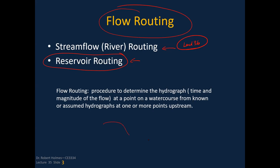If I've got a river system and the flow is going in one direction, and I know the hydrograph at an upstream location, by the time the water gets downstream, that hydrograph is going to have a different look — broader and a little flatter. The routing process describes how the hydrograph changes from one location to the next downstream.